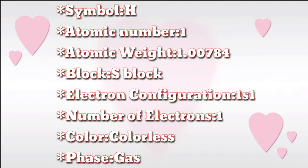Symbol: H. Atomic number: 1. Atomic weight: 1.00784. Block: S block. Electron configuration: 1s¹. Number of electrons: 1. Color: colorless.